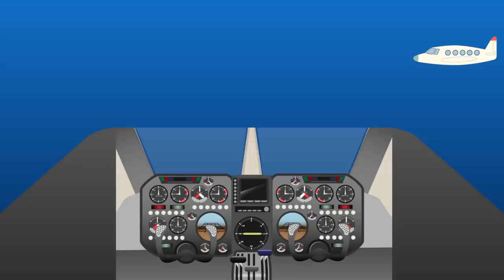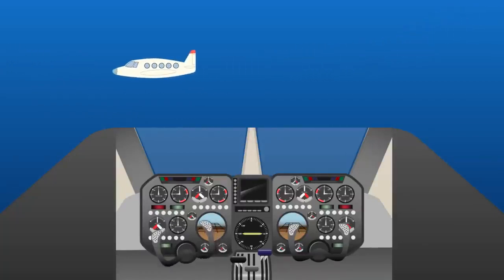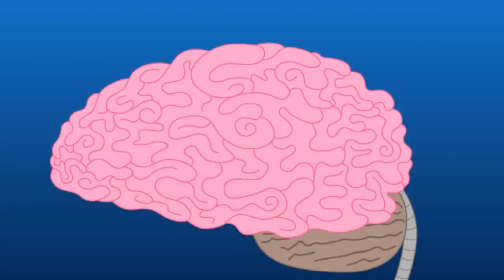Imagine the cockpit of a plane. It is packed full of dials and it is the pilot's job to make sure they all stay in the right place. If any of them change, he will correct the plane to keep them in the right place and the plane in the air. This is a bit like how our brain works.